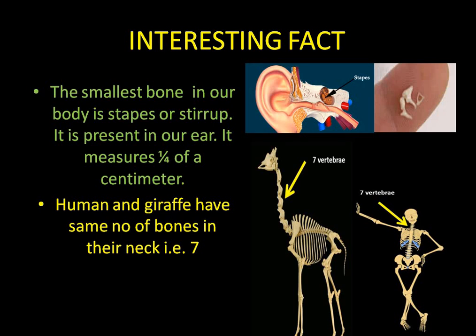Here is a very interesting fact: the longest bone is the femur, while the smallest bone is the stapes, or stirrup. It is present in our ear and measures about one-fourth of a centimeter. This is the stirrup bone — here is a close-up of it. Also, an interesting fact: human beings and giraffes both have seven bones in their neck. We have seven bones and a giraffe also has seven bones, but just see the comparison — a giraffe has such a long neck while we have a very small neck.